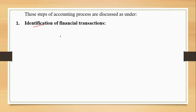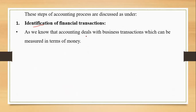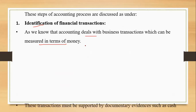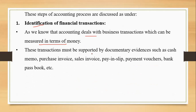The first step is identification in monetary terms. Accounting deals with transactions which can be measured in terms of money, so we restrict ourselves to those transactions only. Every business transaction needs to be supported by documentary evidence. For cash sales we have cash memo, for credit purchases a purchase invoice, for credit sales a sales invoice, and for bank deposits a pay-in slip.